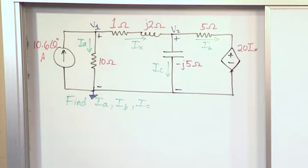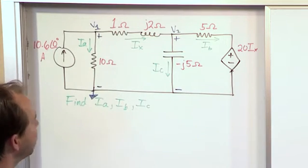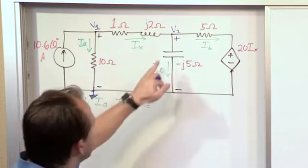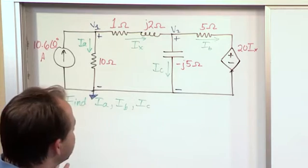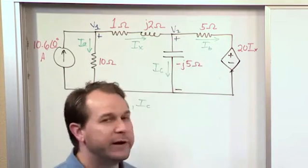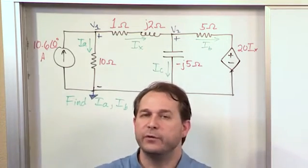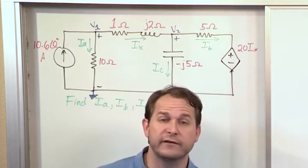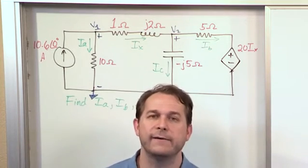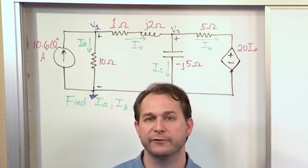So we're going to end up writing a node voltage equation at this node, node number 1. We're going to get that equation simplified as much as we can, and then we're going to write a node voltage equation at node 2, and we'll get that equation simplified as much as we can. If we do everything correctly, we should have two equations and two unknowns. The two unknowns that we'll have will be V1 and V2, which would be phasor voltages.